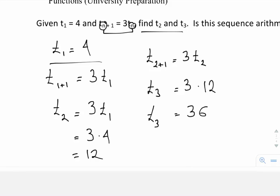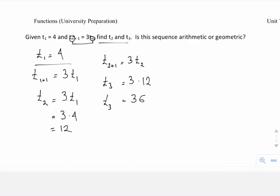And that's our t3 value. So if we list these terms in order, we have 4, 12, 36.